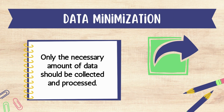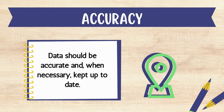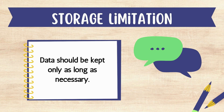Data minimization means that only the necessary amount of data should be collected and processed. Accuracy means that data should be accurate and, when necessary, kept up to date. Storage limitation means that data should be kept only as long as necessary.